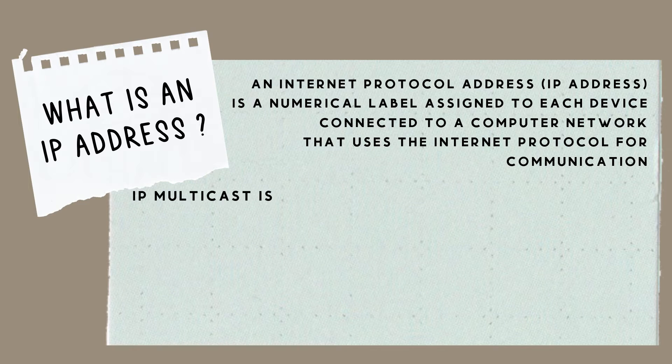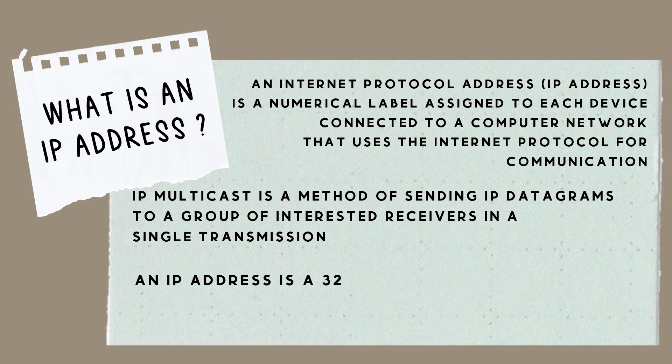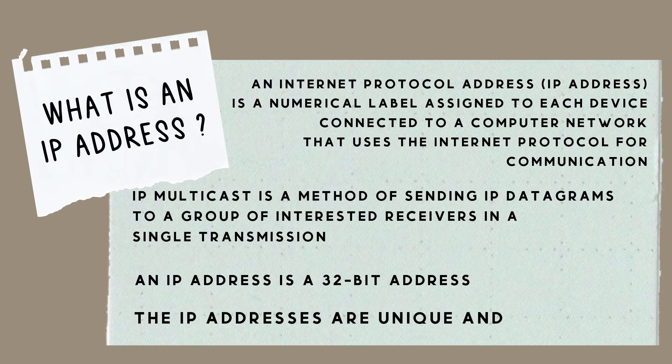IP multicast is a method of sending IP datagrams to a group of interested receivers in a single transmission. An IP address is a 32-bit address. The IP addresses are unique and universal.